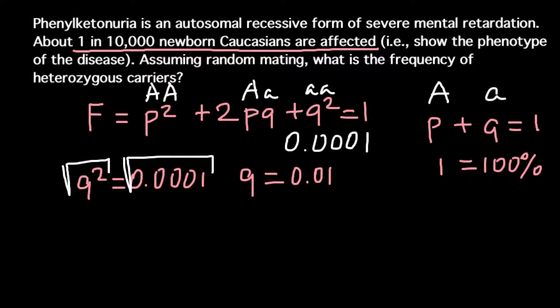Or we also can say that one percent of the alleles in this gene pool would be recessive allele a or q. And of course we can easily say that p would be 0.99. So p would equal to 1 minus q or 1 minus 0.01. So p would equal to 0.99. And this is going to be the frequency of the dominant allele.